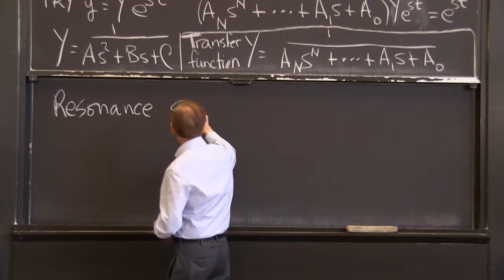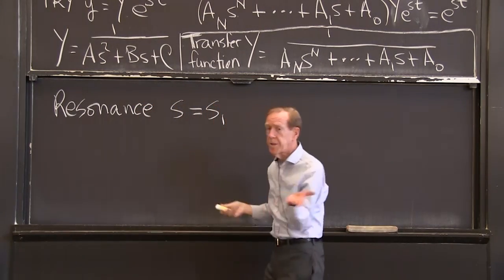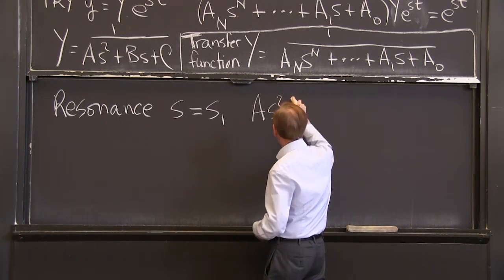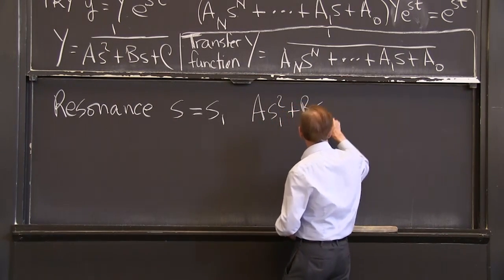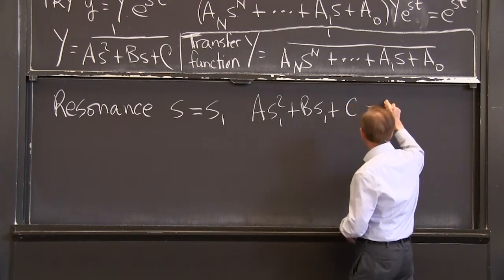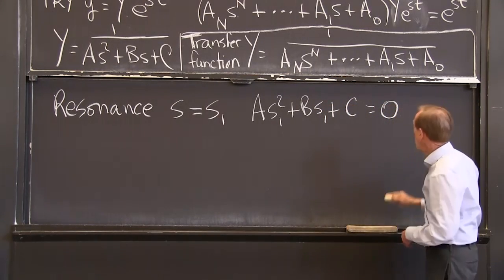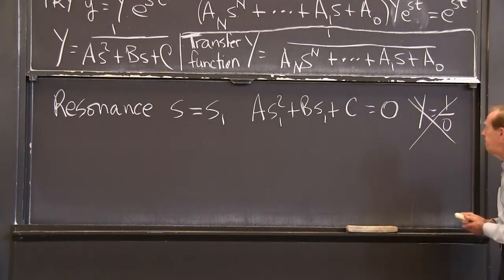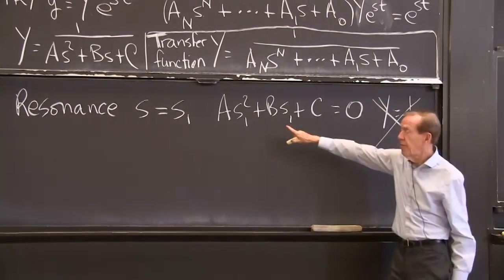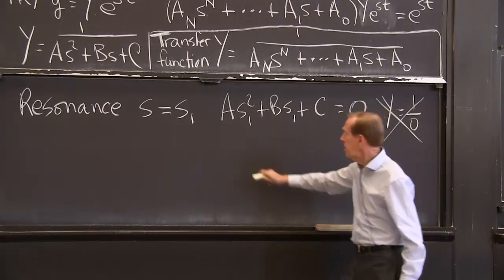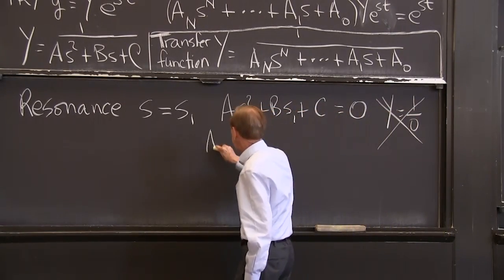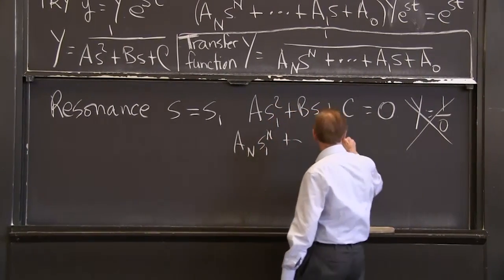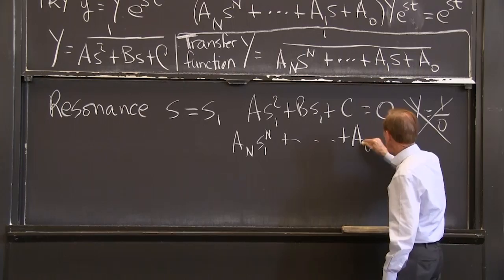The transfer function has this in the denominator. And when this is 0, that identifies a pole. So the s1, s2, to sn are the poles. And we hope that this s is not one of those, but it could be. And if it is, we need a new formula. So that's the only remaining case. And this is a completely nice picture. We just need this last case of resonance.